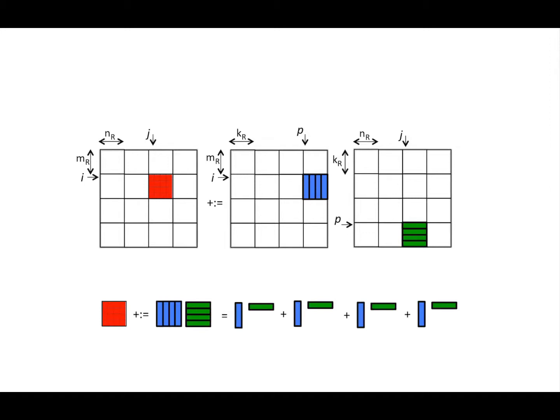Okay, so now here is the next observation. We've already concluded that we can bring one block of C into registers and then compute by streaming columns of a block of A and rows of a block of B through the registers,